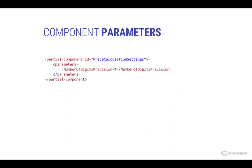Another option for components is parameters. These parameters can be anything from other components that need to be injected, or in this case, little configuration bits. Generally you add a parameters element and then refer to the actual name of the constructor parameter or a property on the class. In this case the number of digits precision for the price calculation is a property on a class, and that enables you to override the value in an app.